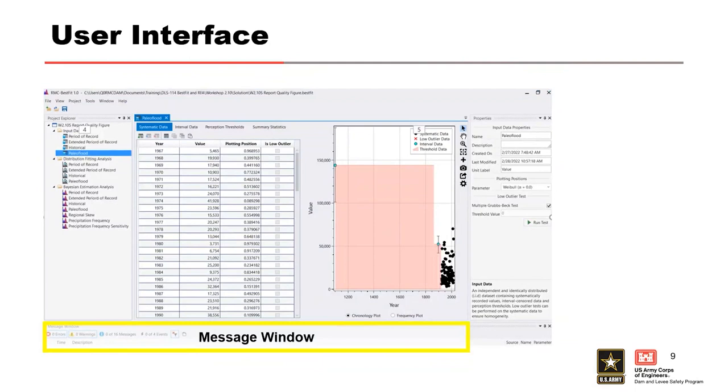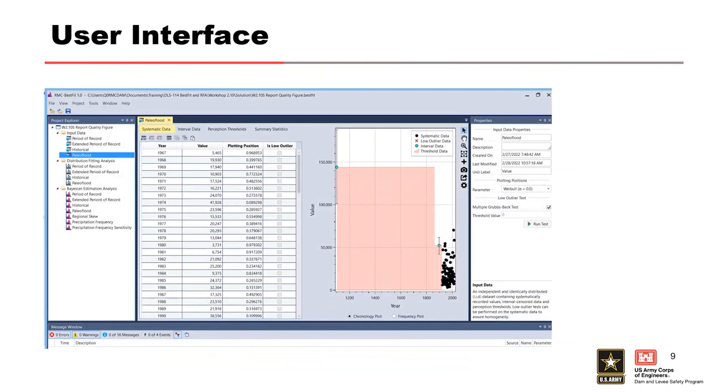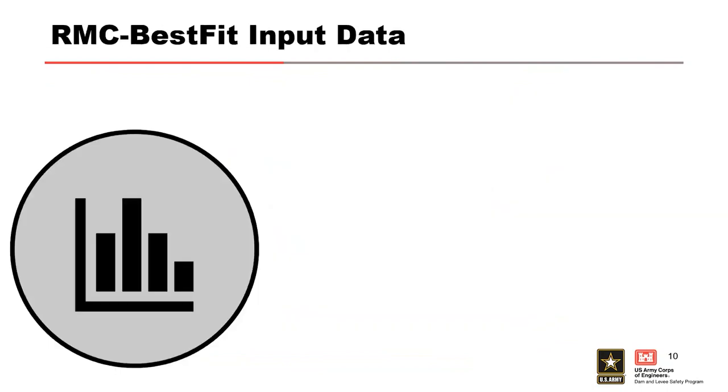There are also two color themes to choose from. You can see the one up here is the light. There's also a dark, darker blue version. Both themes can be selected from the options under Tools in the menu bar.